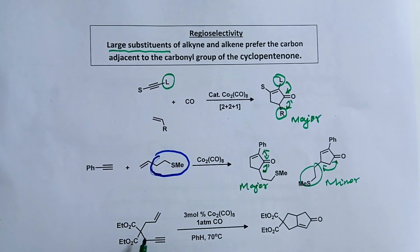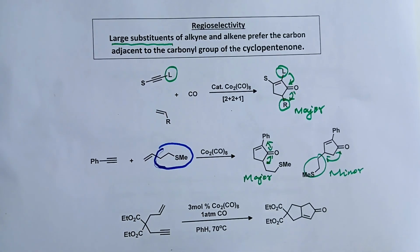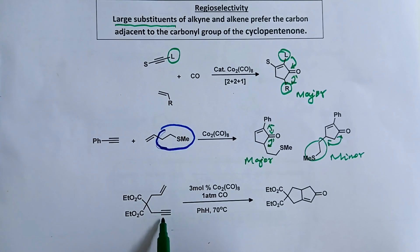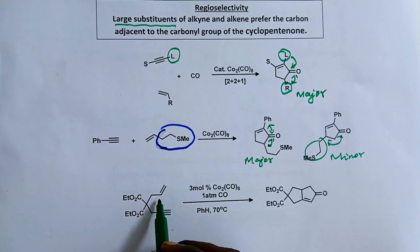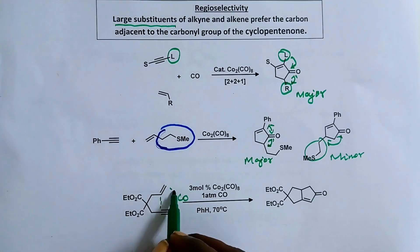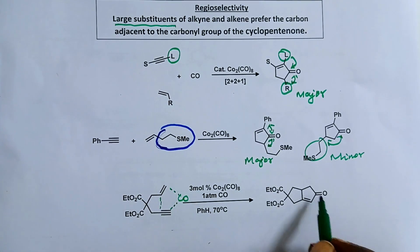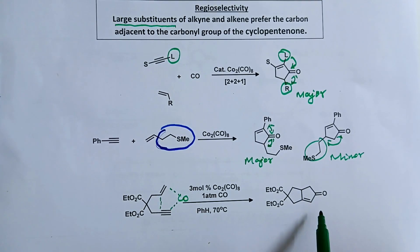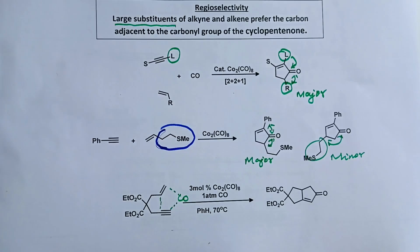Let us see the intramolecular Pauson-Khand reaction. Here alkene and alkyne are connected through three carbons. You get a chain like this, and the product is cyclopentenone — specifically cyclopentenone fused with a cyclopentane. This is intramolecular Pauson-Khand cycloaddition.